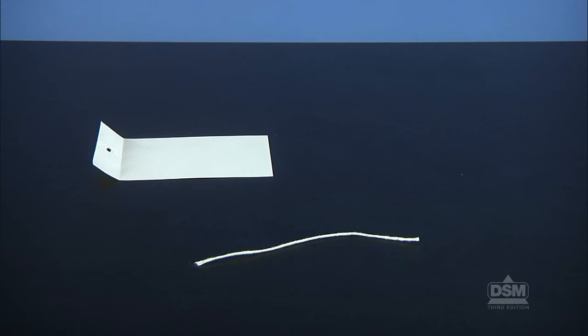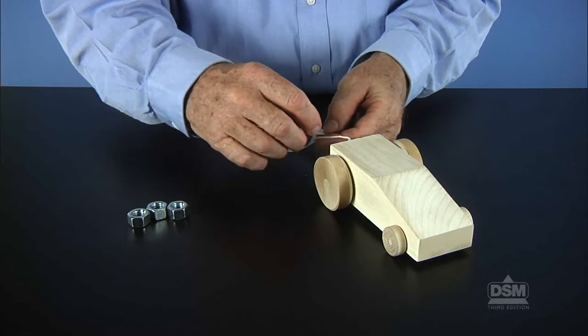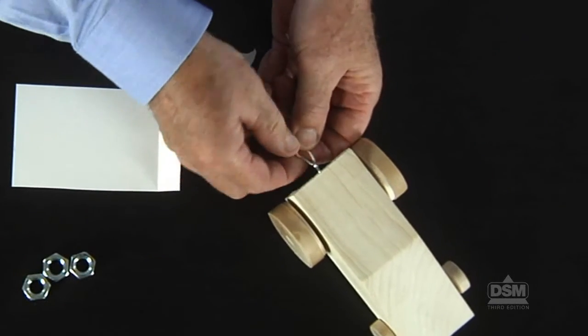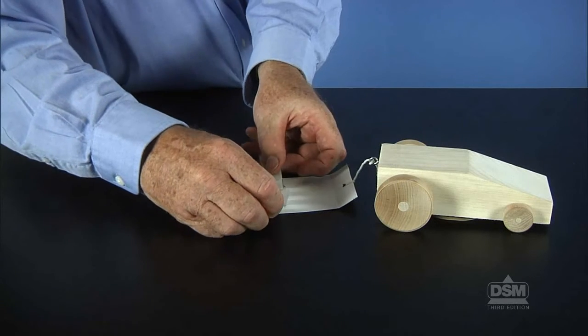Next, have the students predict what would happen to the distance the tractors travel if they were to pull a weighted sled. Distribute an index card sled, a piece of string, three hex nuts, and a piece of tape to each team. Direct the students to tie one end of the string to the hole in the sled and the other end to the screw eye at the rear end of the tractor. Then place the hex nuts in a row on the sled and tape them down.